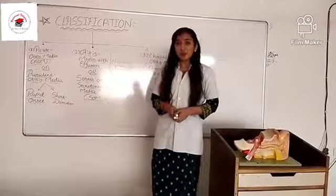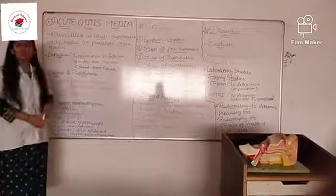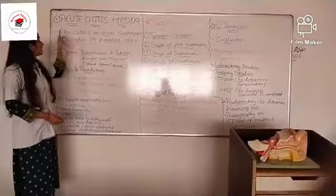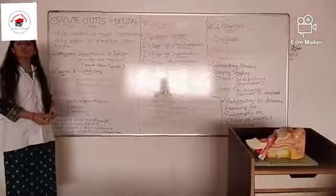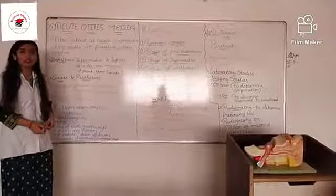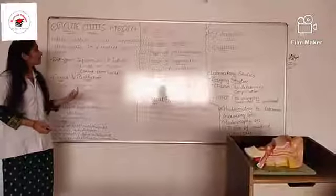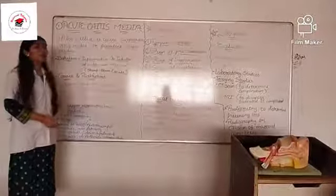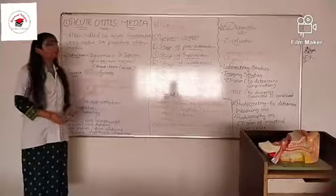Acute otitis media is also called acute suppurating otitis media or purulent otitis media. Because of the purulent discharge, it is an inflammatory process. Acute otitis media is defined as the inflammation and infection of the middle ear mucosa.